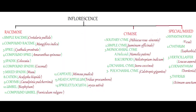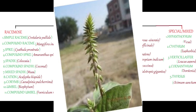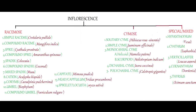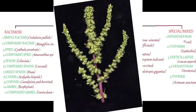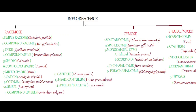Compound raceme or panicle is simply a branched simple raceme. Example: Mangifera indica. The third one is spike, where sessile flowers are arranged acropetally on an unbranched inflorescence axis. The only difference between spike and simple raceme is that in simple raceme flowers are stalked, whereas in spike flowers are sessile. Example: Cyatula prostrata. The fourth one is compound spike, where the inflorescence axis is branched and sessile flowers are arranged acropetally on a branched axis — simply a branched spike. Example: Amaranthus spinosus.